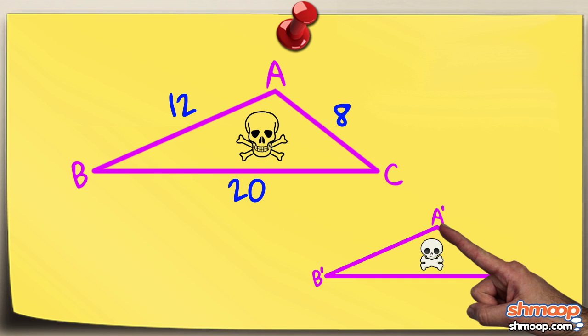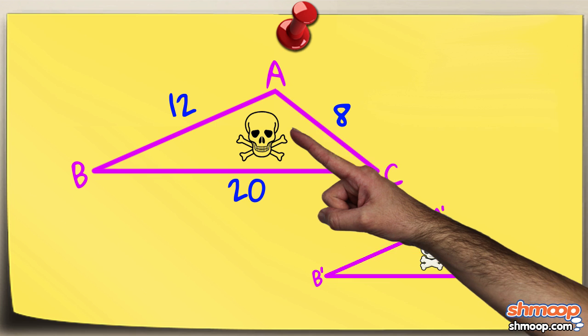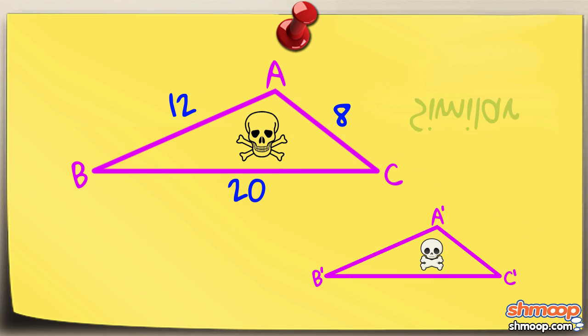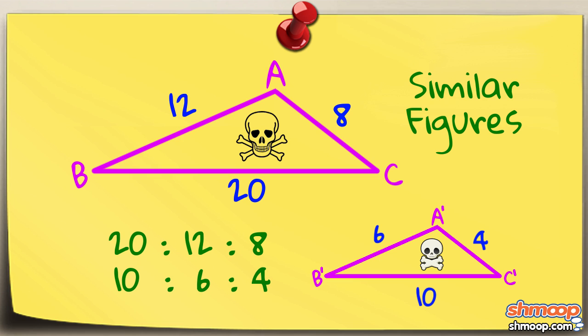If each side of the Little Bermuda Triangle is exactly proportional to the corresponding side of the real Bermuda Triangle, the two triangles would be similar figures. So, if Little Bermuda is 10 by 6 by 4, the triangles would be similar, since each distance is exactly half that of the original.